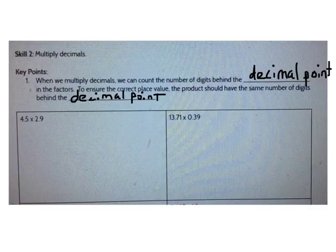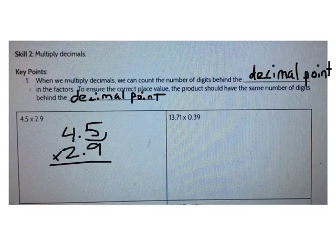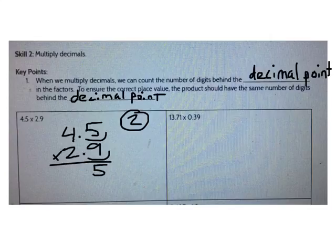So let's look at an example together: 4 and 5 tenths times 2 and 9 tenths. First, how many digits are going to be behind the decimal in my product? Well, there's 1, 2. Now I can multiply like normal. What's 9 times 5? It's 45. What's 9 times 4? It's 36. Plus 4 more is 40.